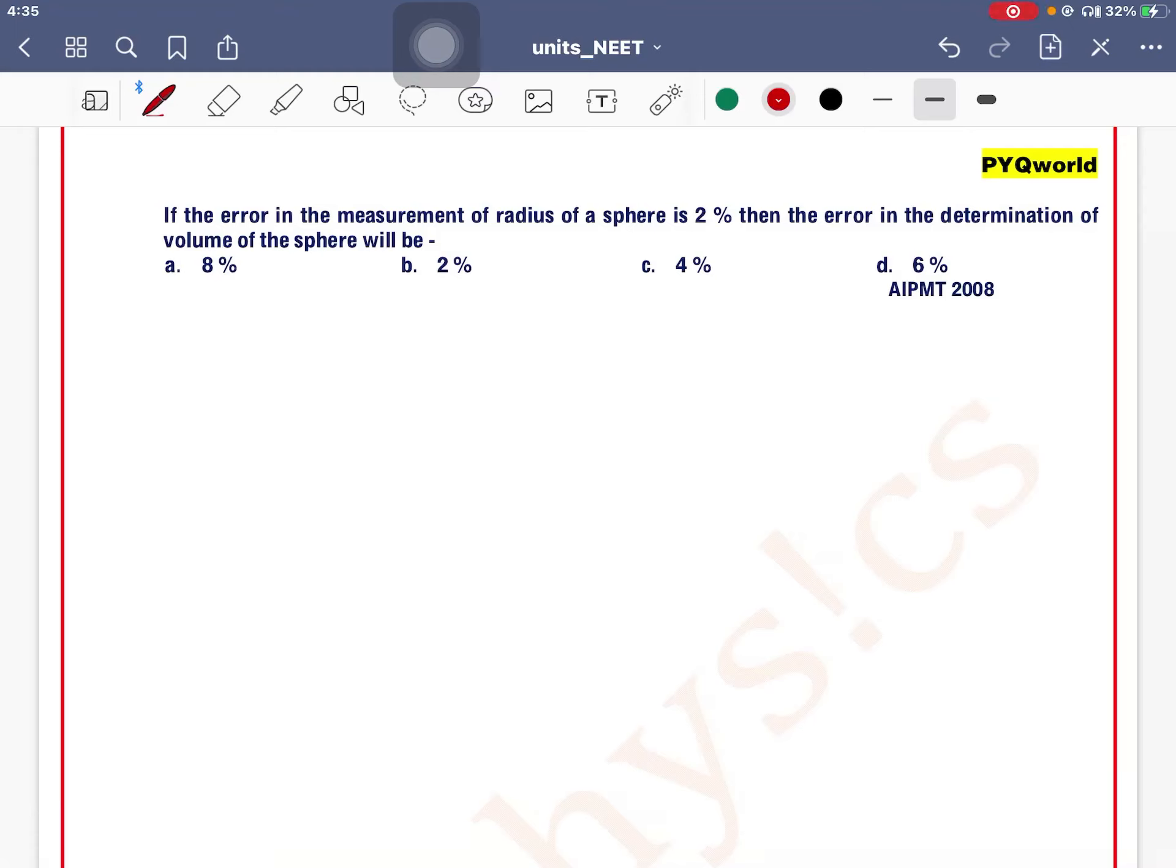If the error in the measurement of radius of a sphere is 2%, then the error in the measurement of volume of the sphere will be? We know that volume of a sphere can be given as V equals